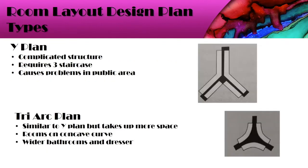Next is the Y plan. The structure is somewhat complicated to construct but may have aesthetic appeal. It requires three staircases throughout the building to access all corridors, though it can cause some challenges when placing public areas. Similar to this is the tri-arc plan, where all rooms are located in three arc shapes on the concave curve of the building. It takes up more space than the Y plan, but the benefit is that rooms will have wider bathrooms and a dresser area due to the arch shape.